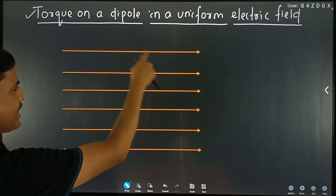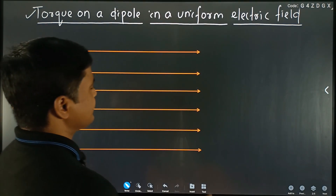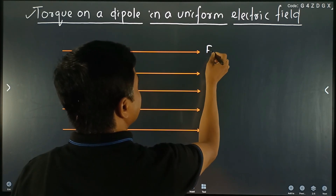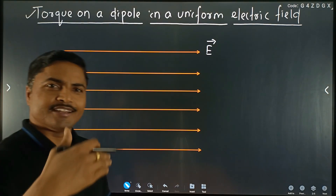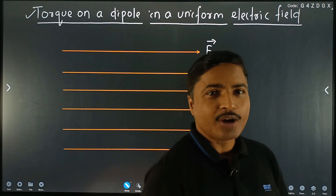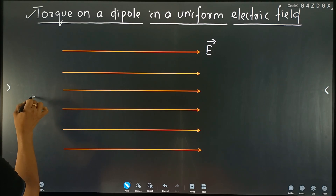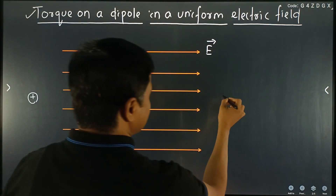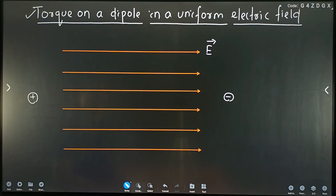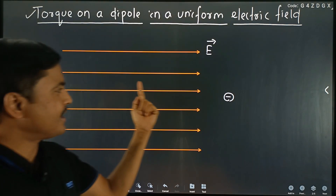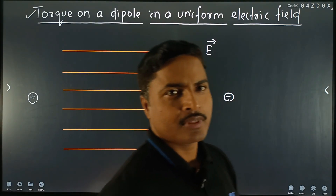In a uniform electric field, at any point, the magnitude of the electric field always remains constant. The direction of the electric field is always outward from the positive charge and towards the negative charge, meaning positive charges are on the left side and negative charges on the right. So the field lines start from the left and end at the right — from positive to negative.